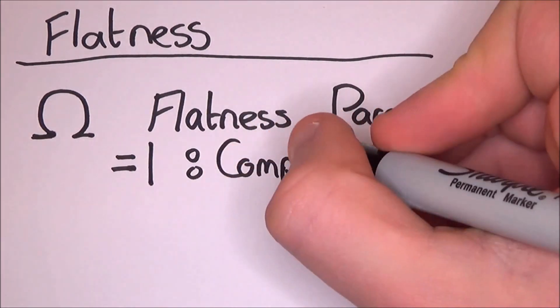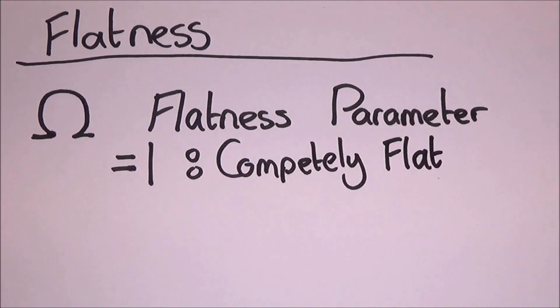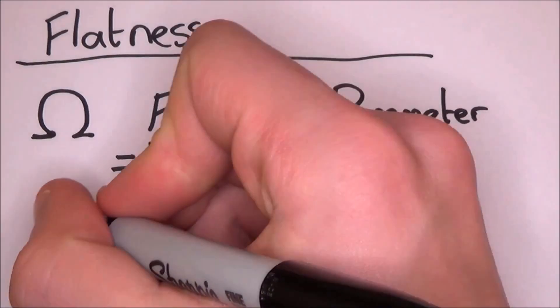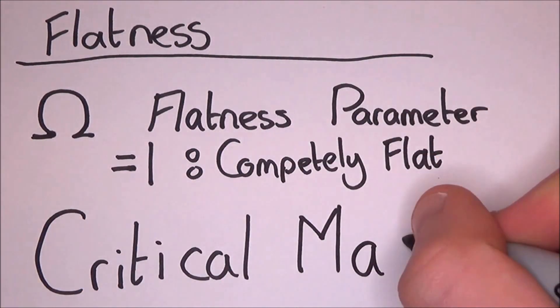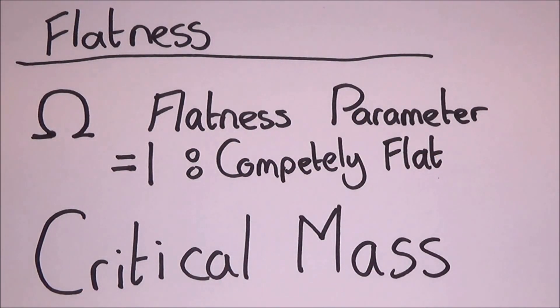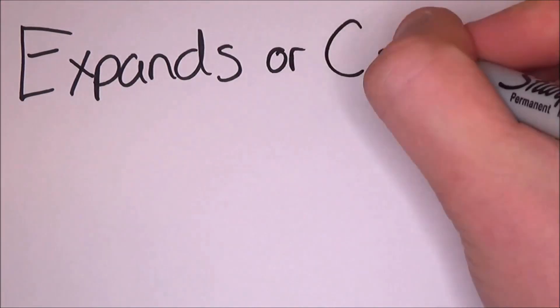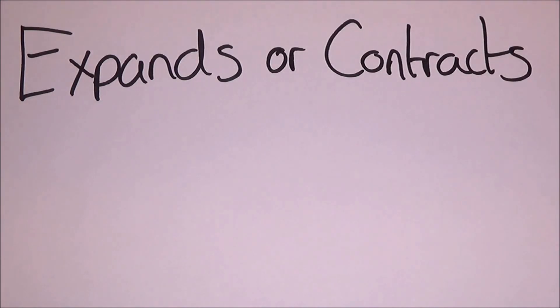The flatness parameter is defined in such a way that if omega equals 1, then space-time is completely flat. Before this idea of inflation though, there was a problem that the mass of the universe is very close to the critical mass. The critical mass of the universe is all about what happens next, whether it keeps expanding or it collapses in on itself. Both are equally as horrifying.